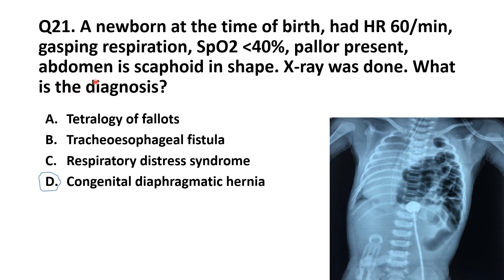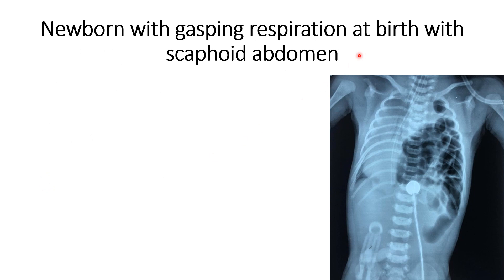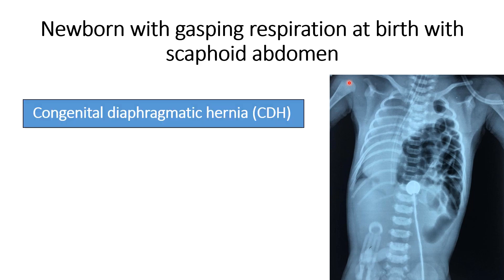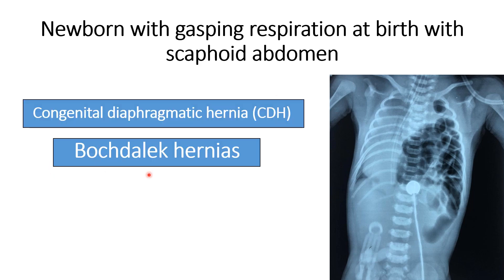This characteristic finding — abdomen is scaphoid in shape — means all the intestinal loops are herniated into the lung field, so the abdomen becomes scaphoid. Whenever at the time of birth you find that a newborn has a scaphoid abdomen, think about congenital diaphragmatic hernia. A newborn with gasping respiration at birth with scaphoid abdomen — diagnosis will be CDH. Bochdalek hernia presents on the left side at the time of birth.